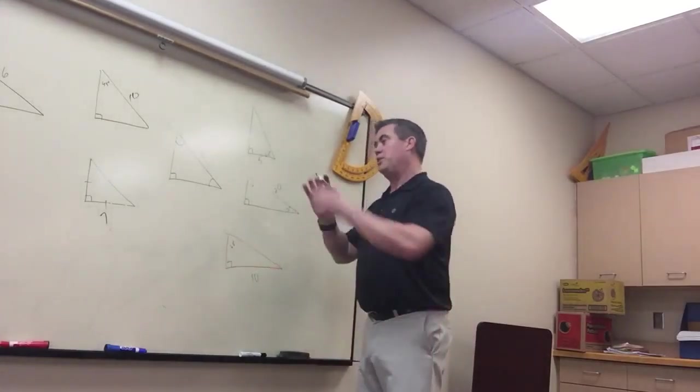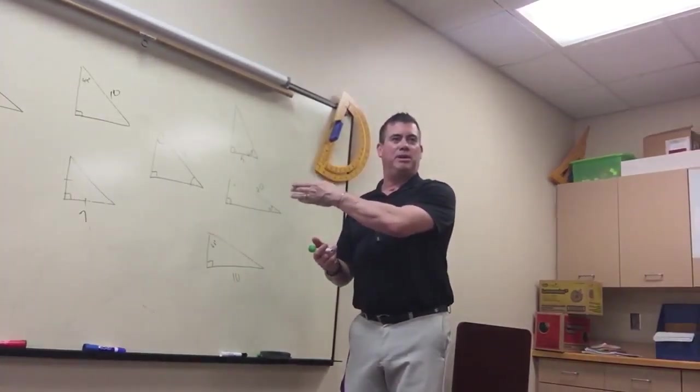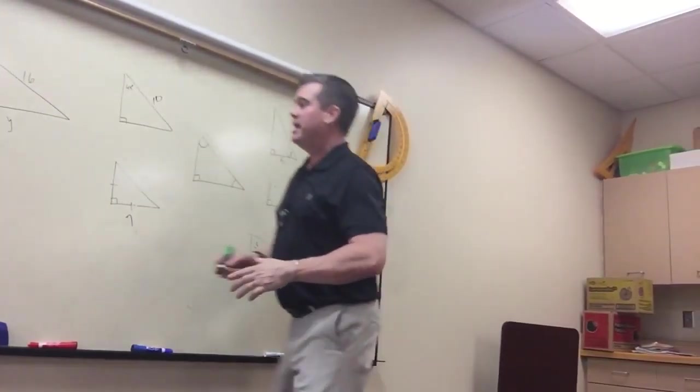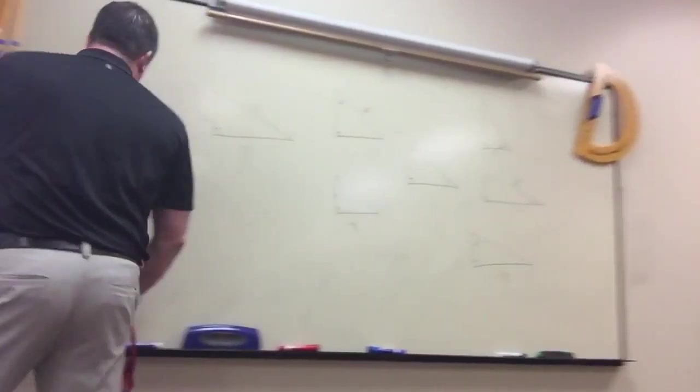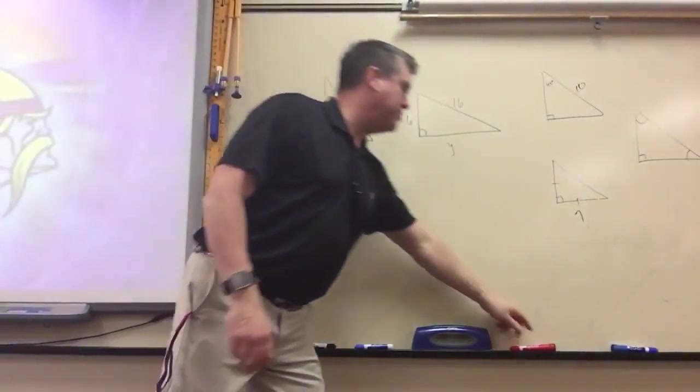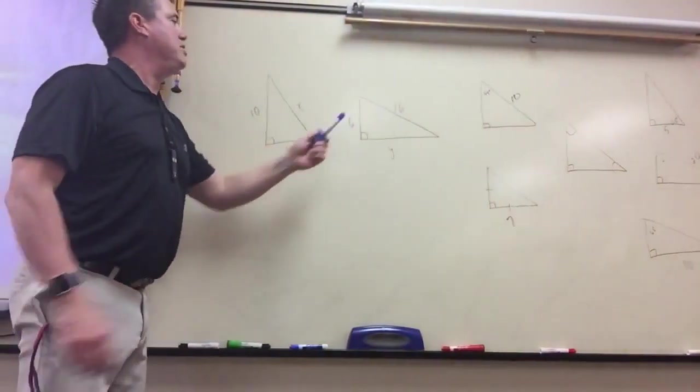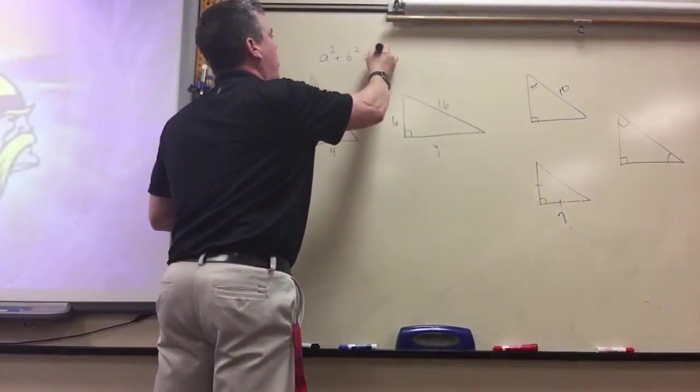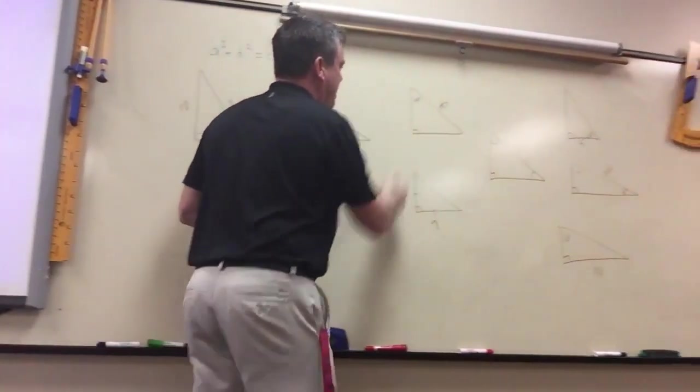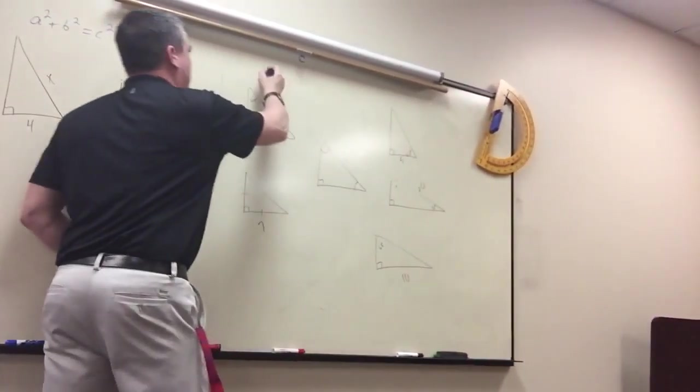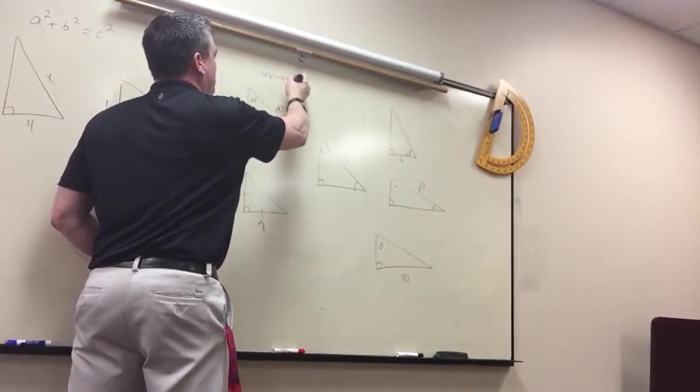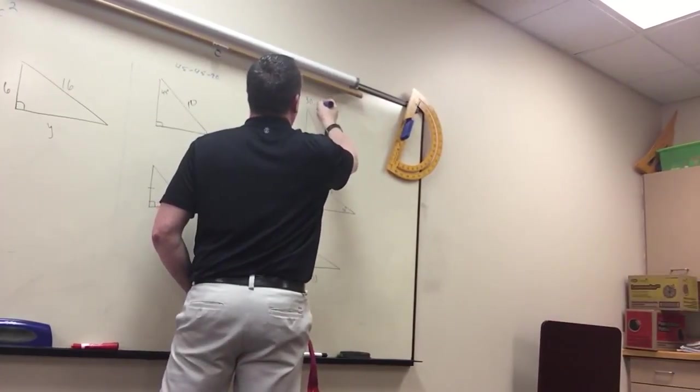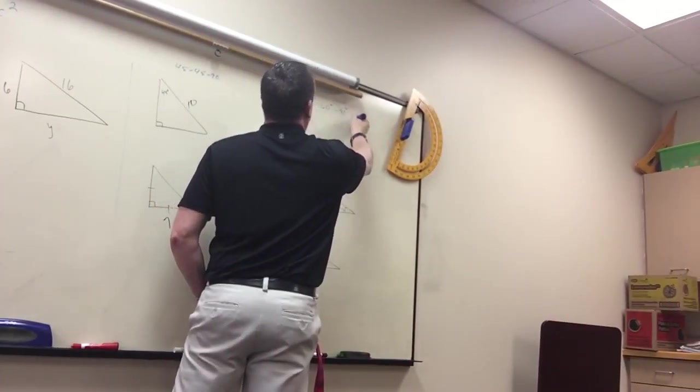So these are the three types of right triangles that we're going to solve. And they're going to be on today's worksheet, kind of a review worksheet. Remember, when you see something that has two sides given, you got to use the Pythagorean theorem. When you see these that have 45-45s, you can use those rules or the 30-60-90, you can use the special rules.